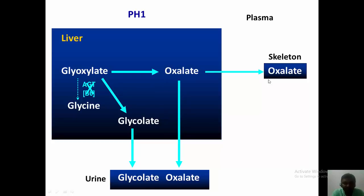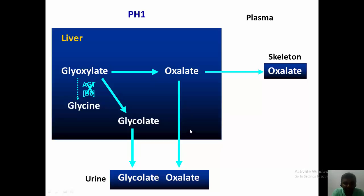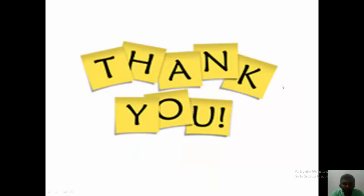In primary hyperoxaluria, this enzyme is deficient, so this pathway is blocked. Glyoxylate then takes alternate pathways: more is converted to glycolate, which appears in the urine, and more is converted to oxalate, which also enters the urine. Once the kidneys are saturated and cannot excrete the excess oxalate, it starts to accumulate in the plasma.